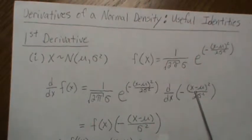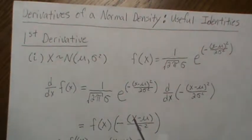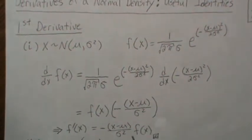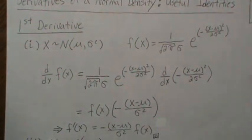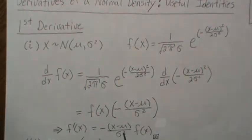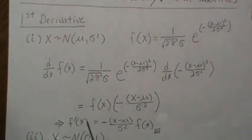So you get this. And so this identity here is used a lot when you're doing integration in the normal density. So the first derivative is equal to minus (X - μ) over σ² times the original density back.